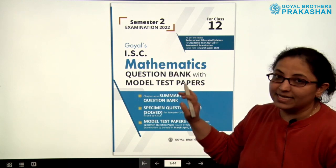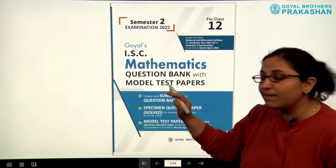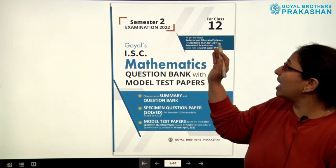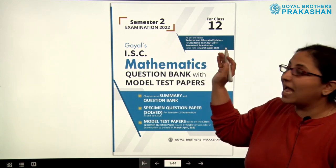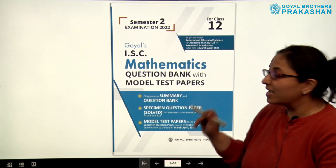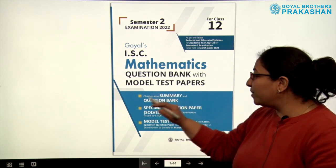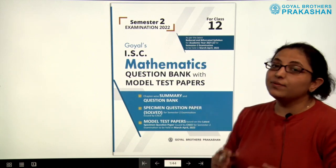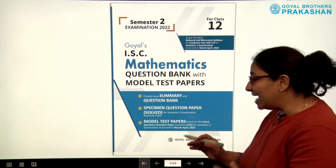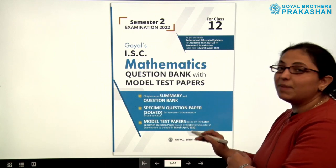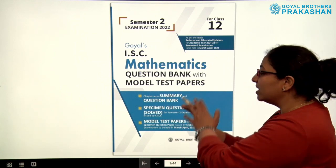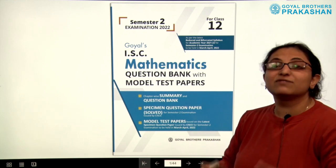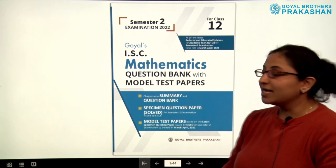This is the book for mathematics. It is basically a question bank with model test papers based on the reduced and bifurcated syllabus for academic year 21-22. This book contains chapter-wise summary and question bank. It has the specimen question paper solved, released by CISCE, and it also has model test papers which are strictly based on the specimen question paper. These are unsolved model test papers for the practice of the students.